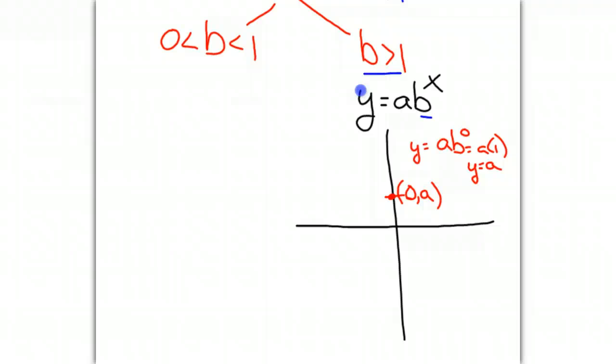And since b is bigger than 1, when we raise a number bigger than 1 to a power, it's going to continue to grow. So our graph is going to look like this. It will have an asymptote at the x-axis because there's no x value that we can substitute into this equation that will give us 0 for a y value. This is what is called exponential growth.